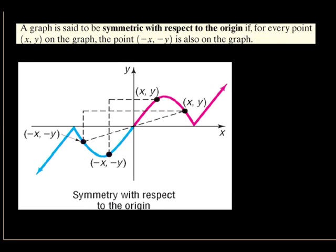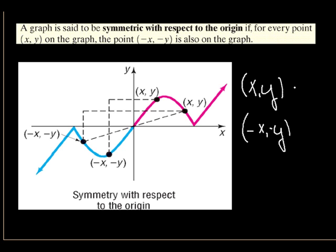For symmetry with respect to the origin — remember, the origin is (0, 0) — the graph follows the line y equals x. If the original point is (x, y), the symmetric point is (-x, -y). For example, if the original ordered pair is (3, 8), then the point symmetric with respect to the origin is (-3, -8).